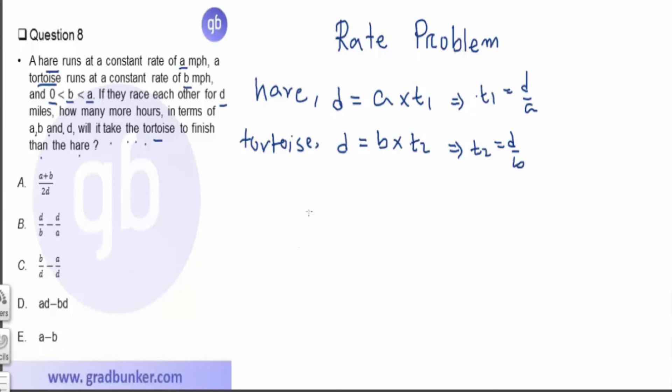That is simply: t₂ minus t₁ equals D over B minus D over A.